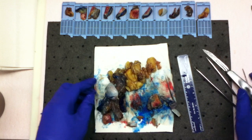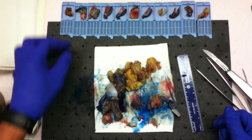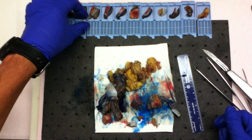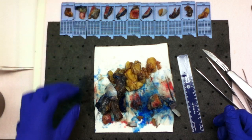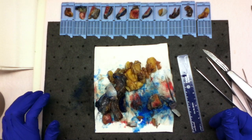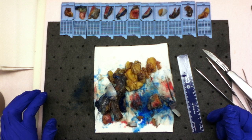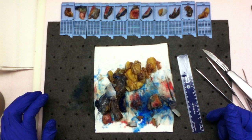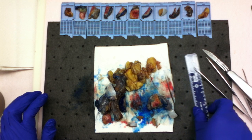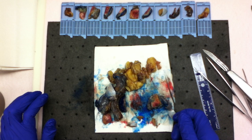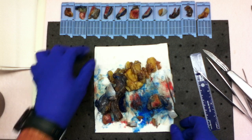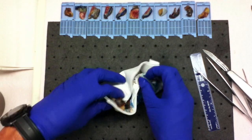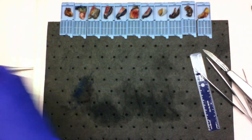Representative sections are submitted as follows: 1. Spermatic cord resection margin, 2 through 7. Mass to include overlying tunica vaginalis, tunica albuginea, and epididymis. 8. Uninvolved testicular parenchyma away from mass. 9. Uninvolved epididymis with overlying soft tissue, 10. Base of spermatic cord, 11. Spermatic cord lipoma.